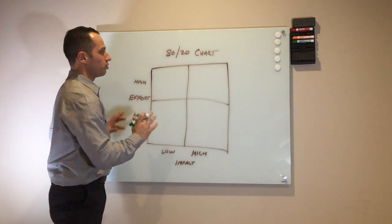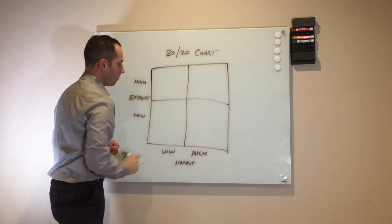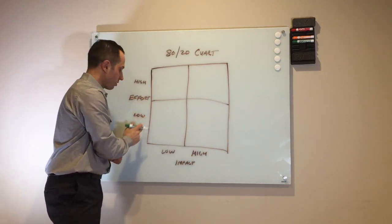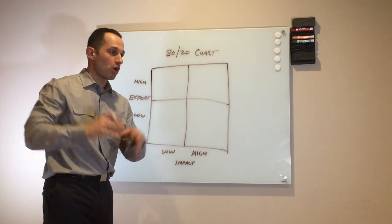You use the 80-20 chart that you see here. The x-axis is impact, high and low. The y-axis is effort, low to high. When you set up your week and you have a hundred tasks you have to do, put them into quadrants like this. You can use a simple Word document to do this.